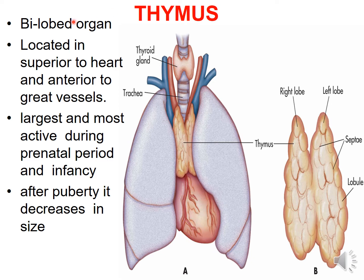The thymus gland is a bilobed organ with a right lobe and a left lobe. It is situated anterior to the great vessels and superior to the heart. It is very large and most active during the prenatal period and infancy. The prenatal period means the pregnancy period; after that it decreases in size.